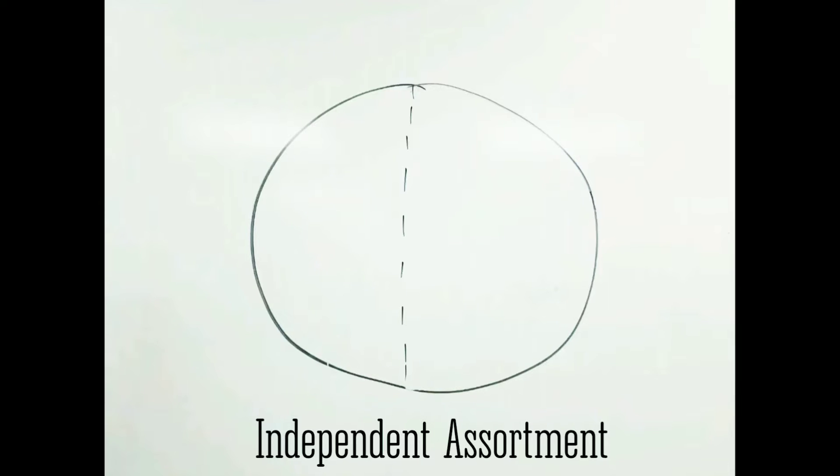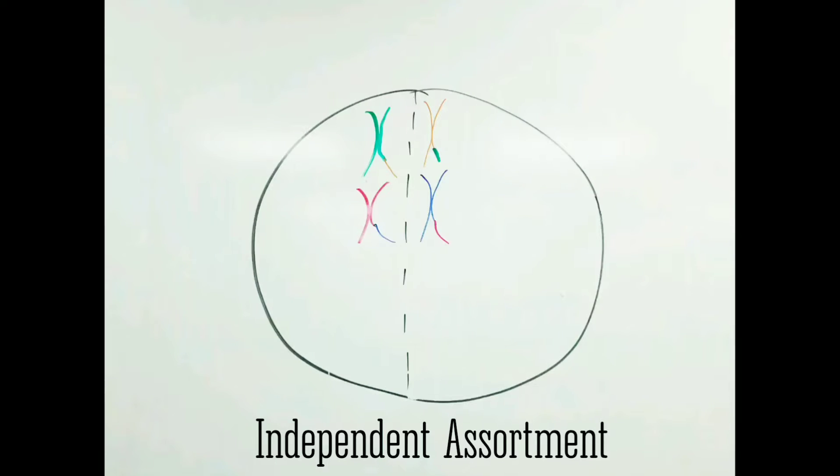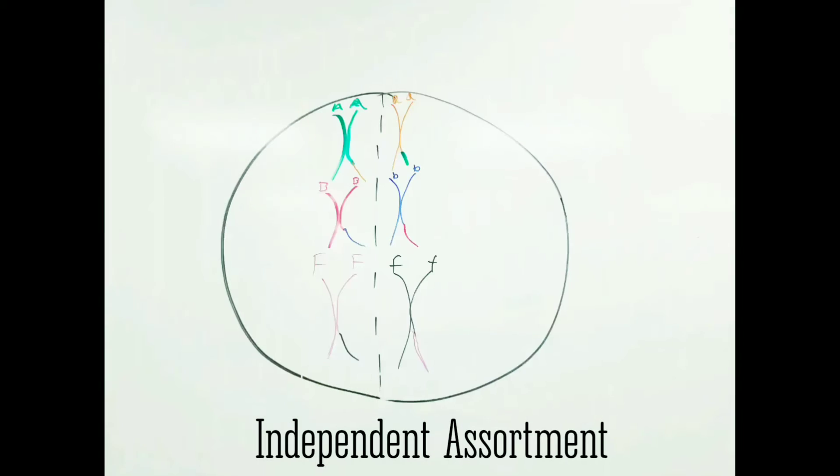Next, the homologous pairs will line up randomly in the middle of the cell. This means that there are a variety of combinations that homologous pairs can line up in. This will further increase genetic diversity.